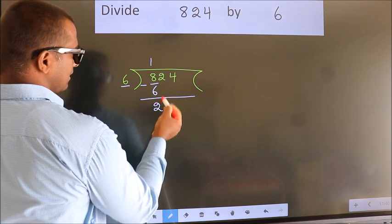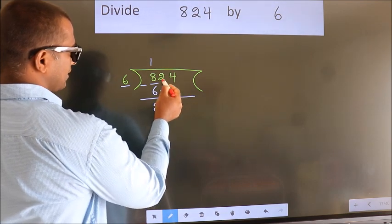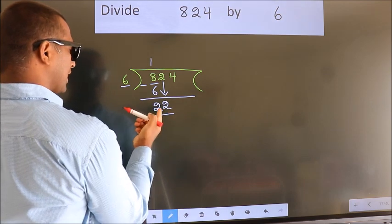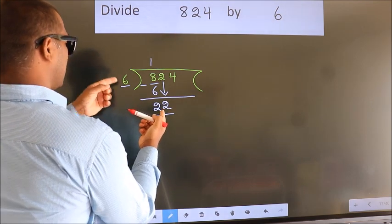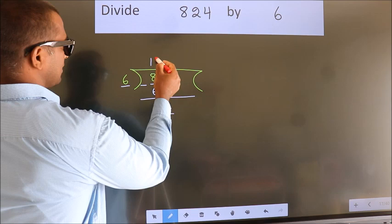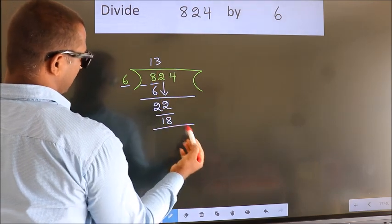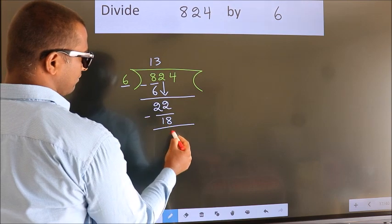After this, bring down the next number. So, 2 down, giving us 22. A number close to 22 in the 6 table is 6 threes, 18. Now we subtract. We get 4.